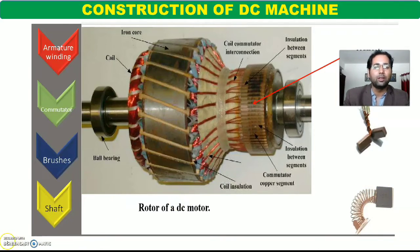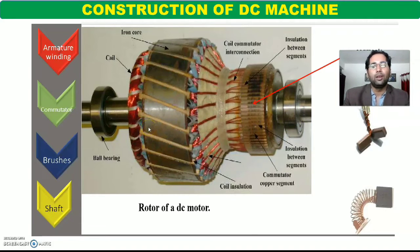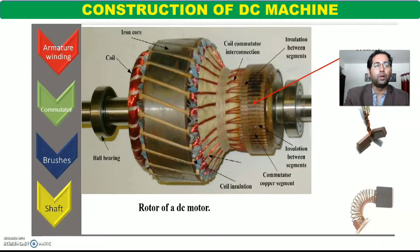So this is all about the construction of DC machine. एक बार recap करें: DC machine के दो important parts हैं — पहला part था stator, दूसरा part था rotor. Stator के parts में pole, stator का frame, और stator की winding जिसको field winding बोलते हैं. Rotor के case में, rotor को हम armature बोलते हैं — तो armature का core, armature की winding, commutator, brushes and shaft. DC motor हो या DC generator हो, construction wise दोनों same हैं. Paper में motor पूछे या DC generator पूछे, आपको construction में same diagram बनाना और same data लिखना है.